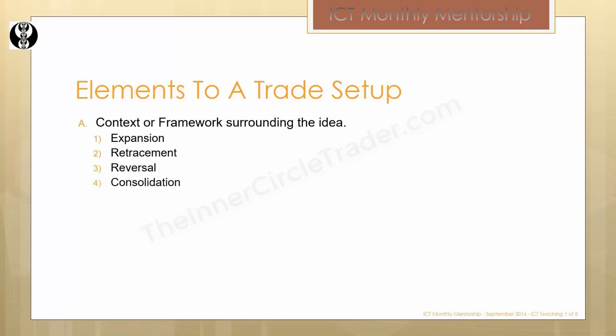Each one of these four gives a specific framework and context to the marketplace that you're going to be trading in. They can only be one of these four conditions. Either the market's going to be expanding — running away, in other words trending — a retracement or pullback, altogether reversal, and obviously when the market's doing nothing, it's consolidating. But really, we all learned in the market maker series that there's no such thing as the market doing nothing, and consolidation is actually accumulating orders.